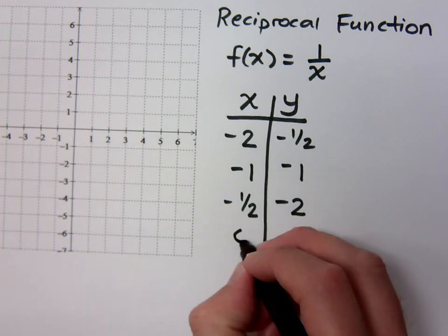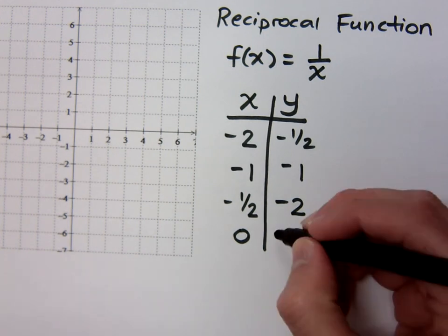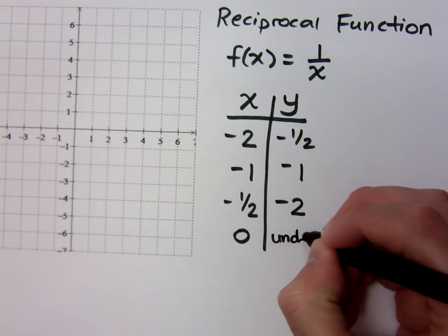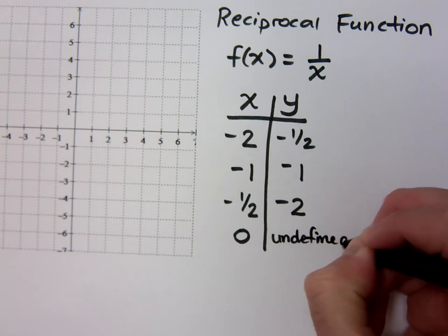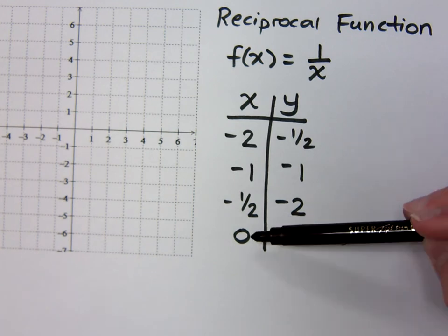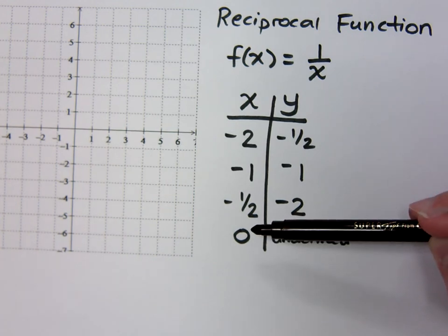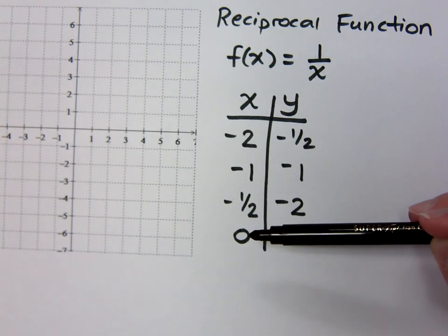What if I plug in 0? Is that no solution? Question mark. Yeah, question mark. You're undefined. And we know that we're undefined because we've seen this stuff before with rational expressions. You can't have your denominator equal 0. This 0 right here is a restricted value for your original function. You can't plug it in there.